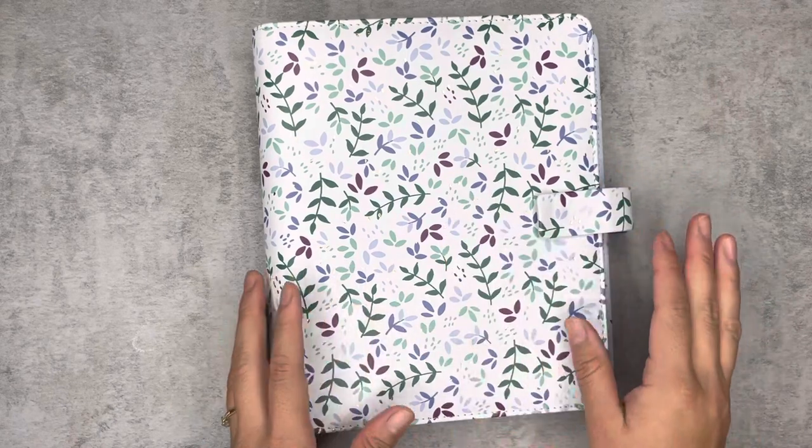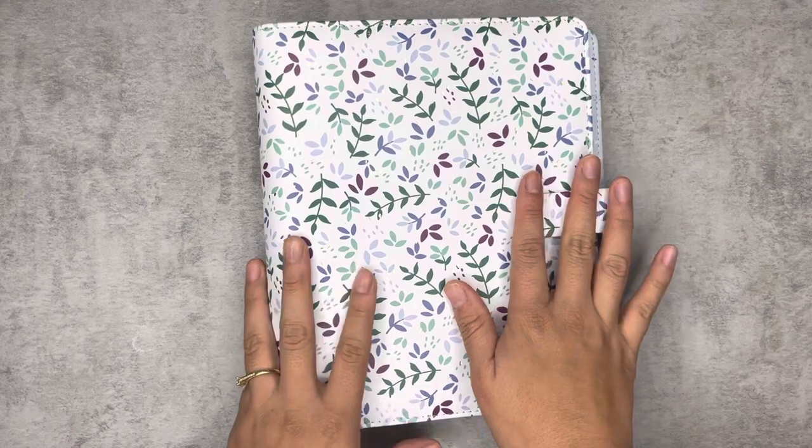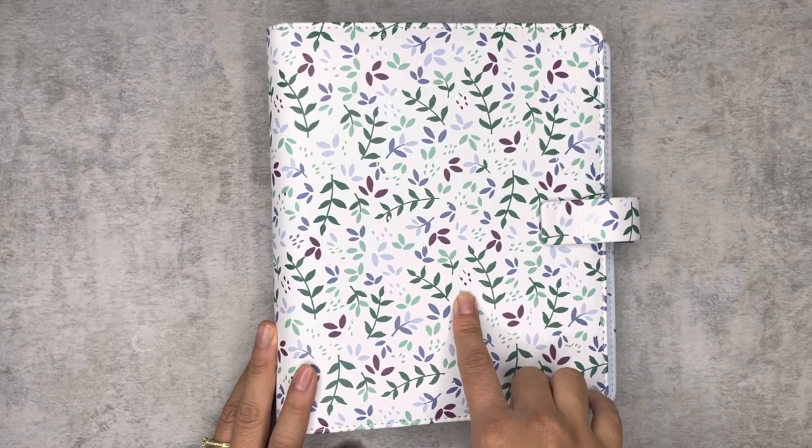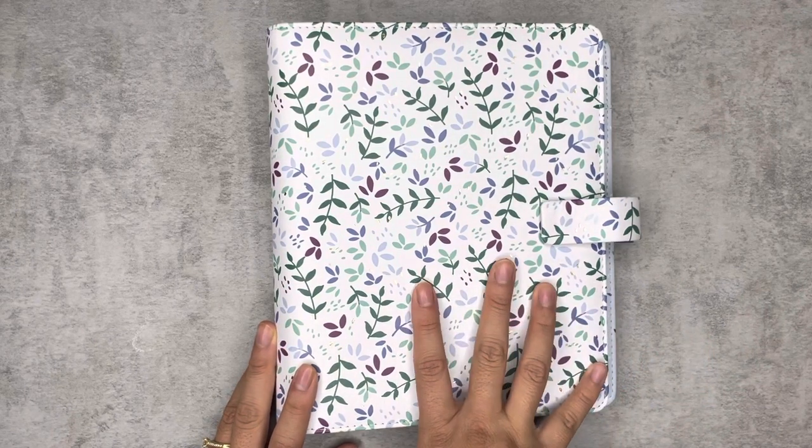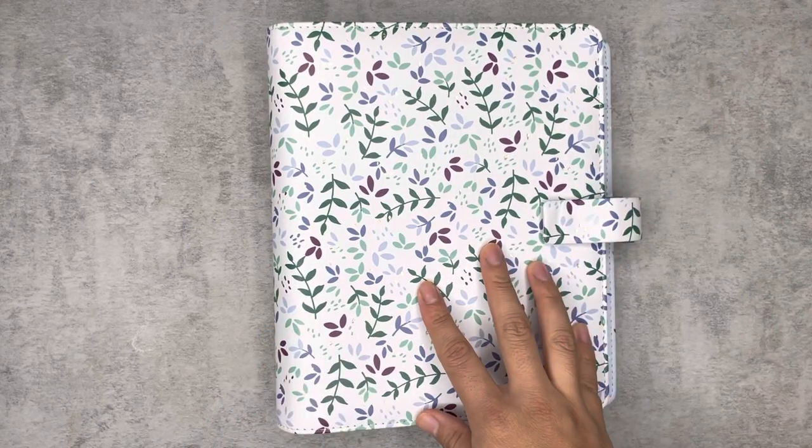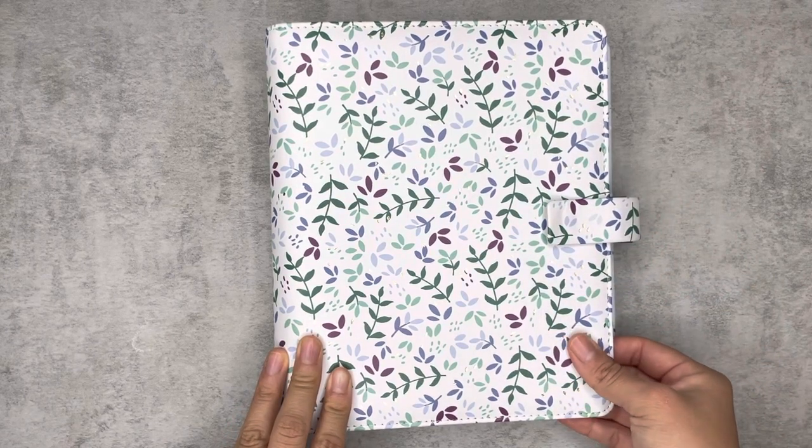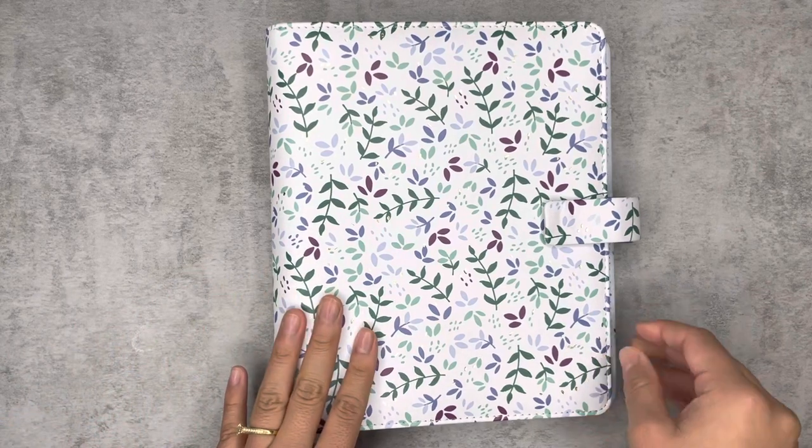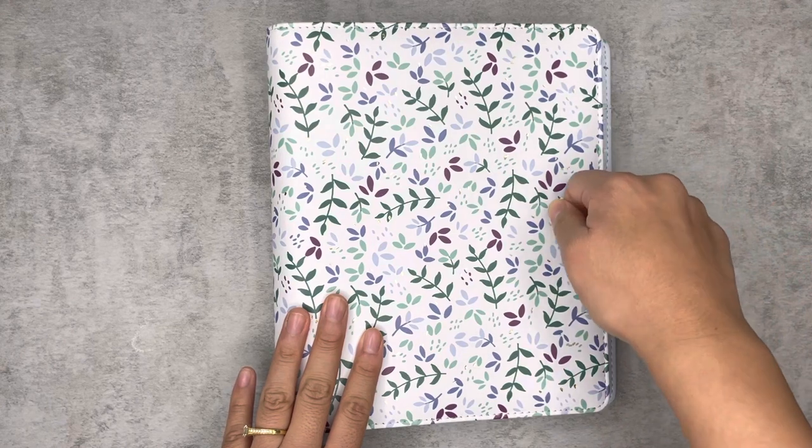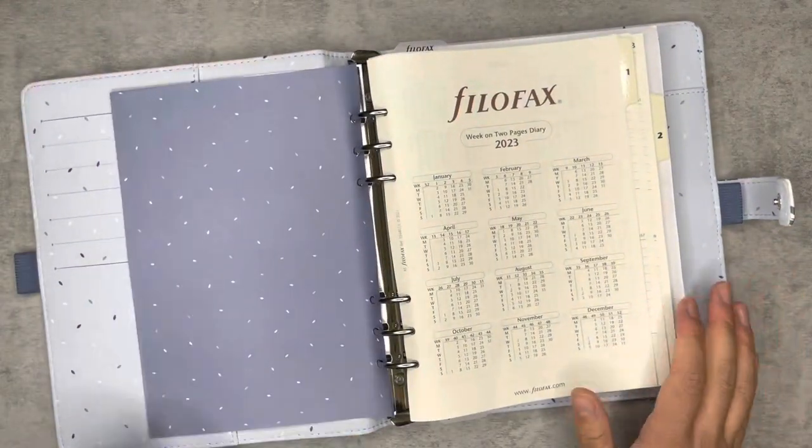So if you're interested in purchasing a Filofax, I'll give you an overview of what this one came with. This one is an A5 size, it's from their collection called Garden, and the cost is $86.99, which is a little pricey, but it's really good quality and I plan on using it for more than one year. The colors are beautiful, it's a snap type of planner which is my favorite.